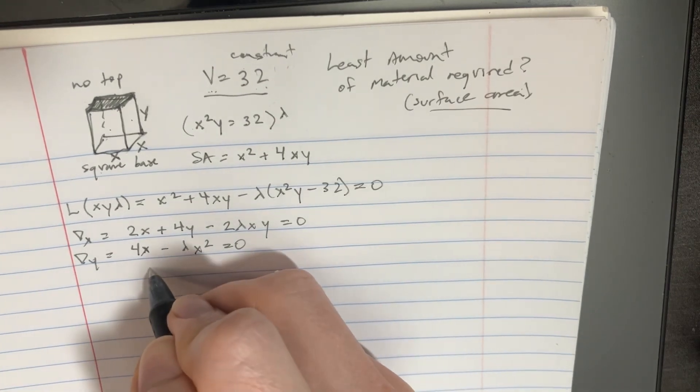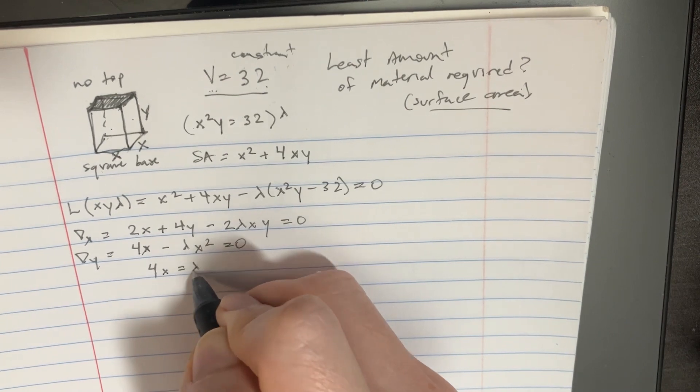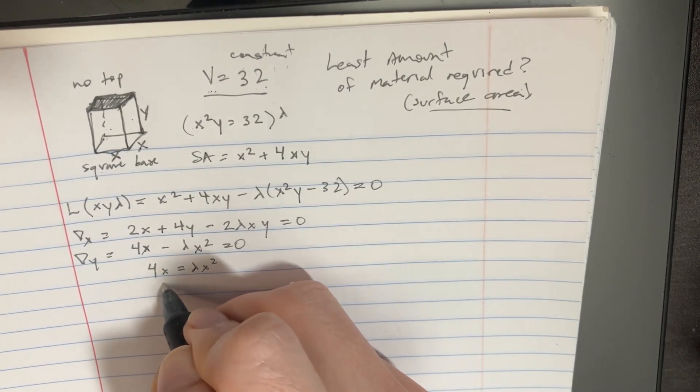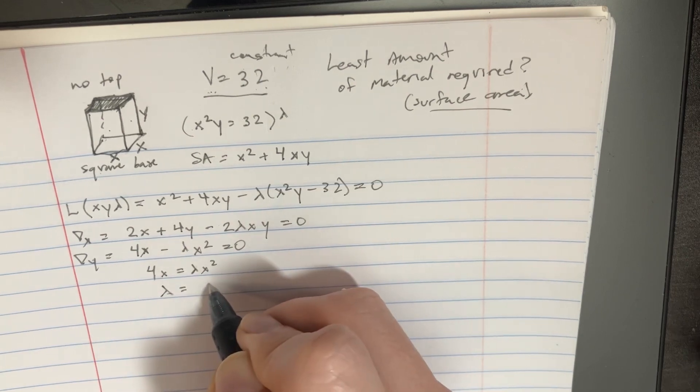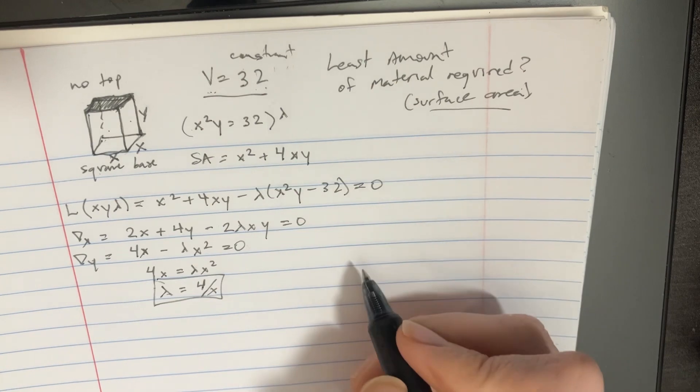Then we can solve for this one, so we'll say that 4x equals lambda x squared and we'll see that lambda is just equal to 4 over x. So that's pretty cool.